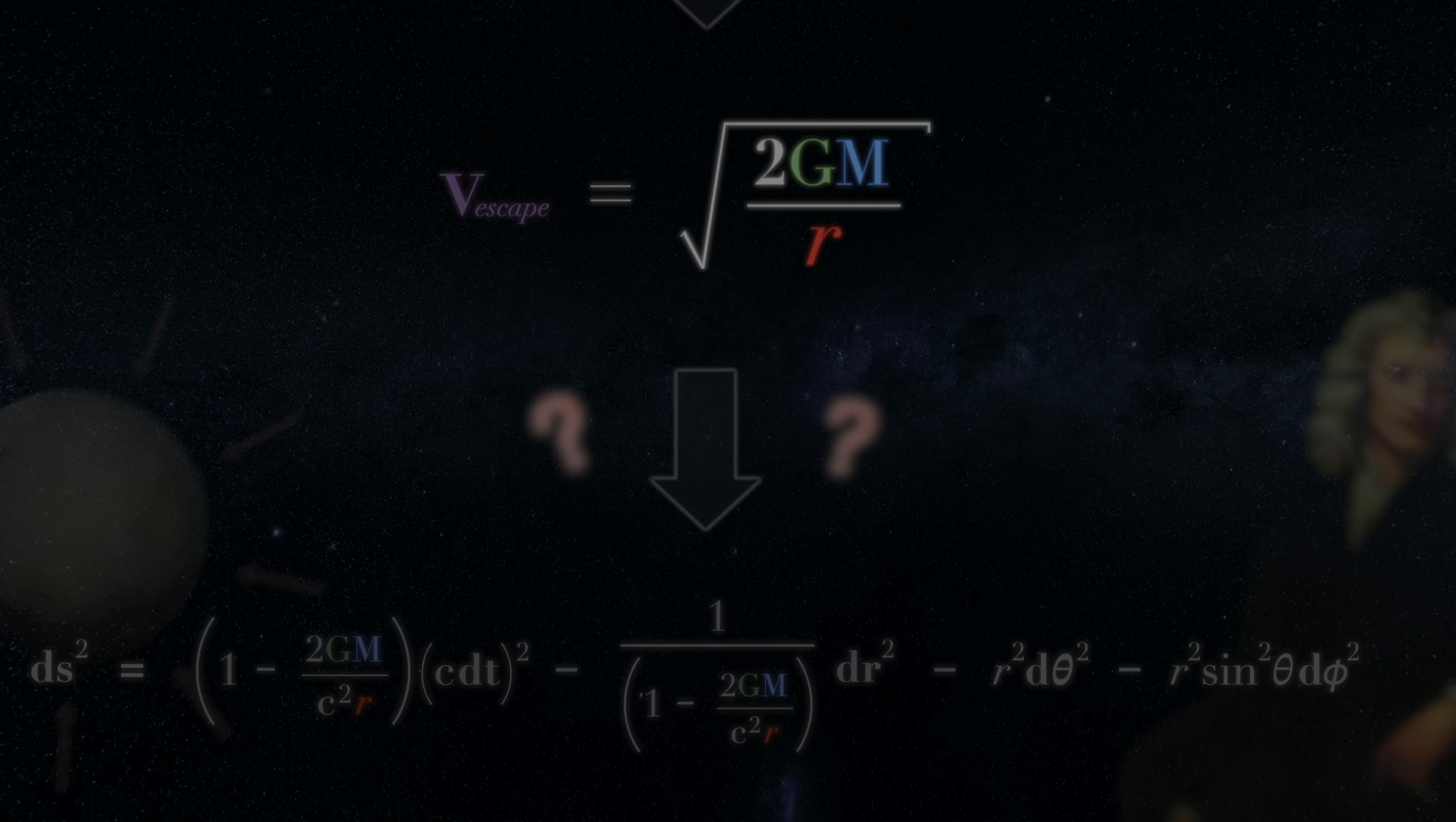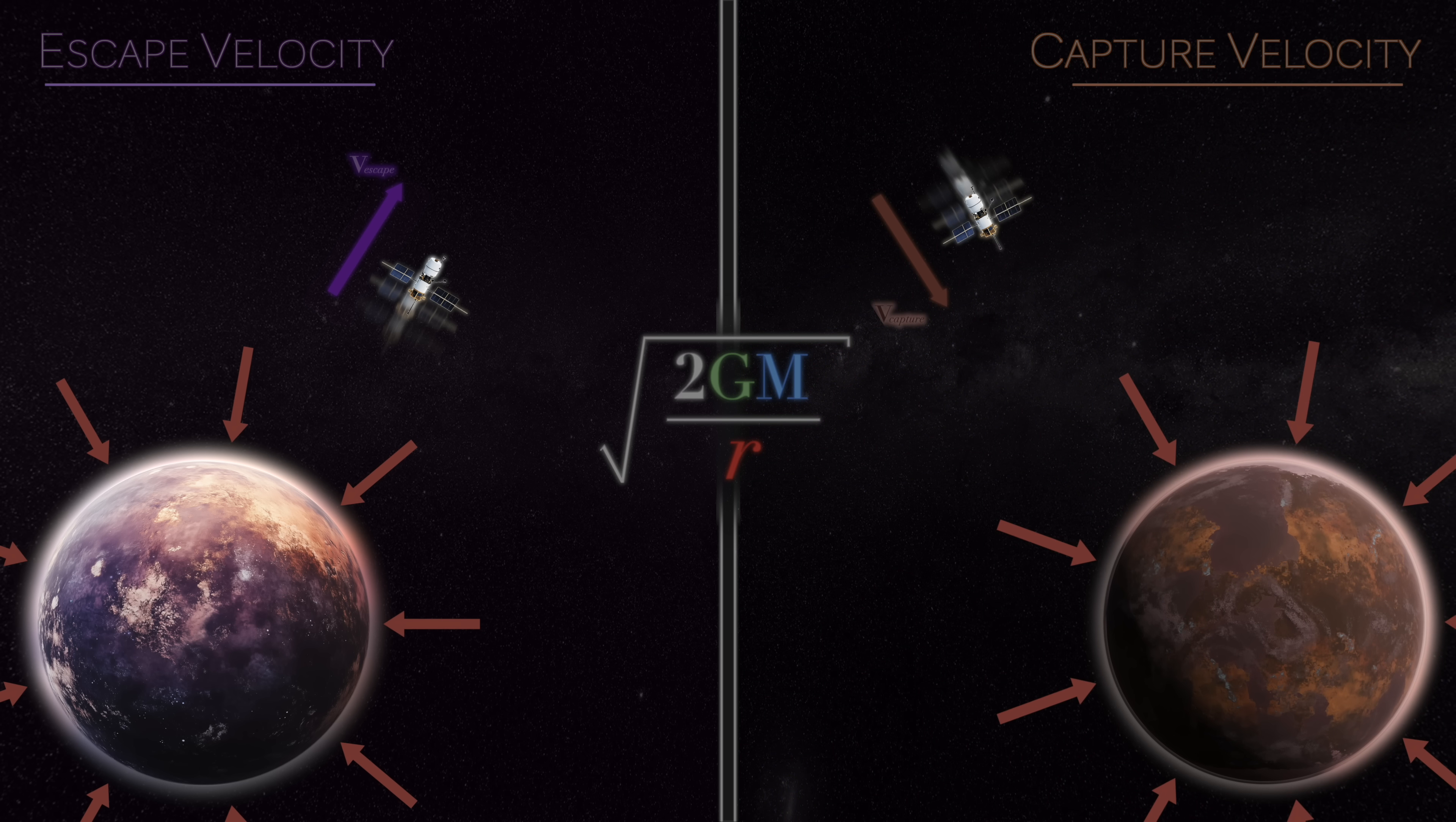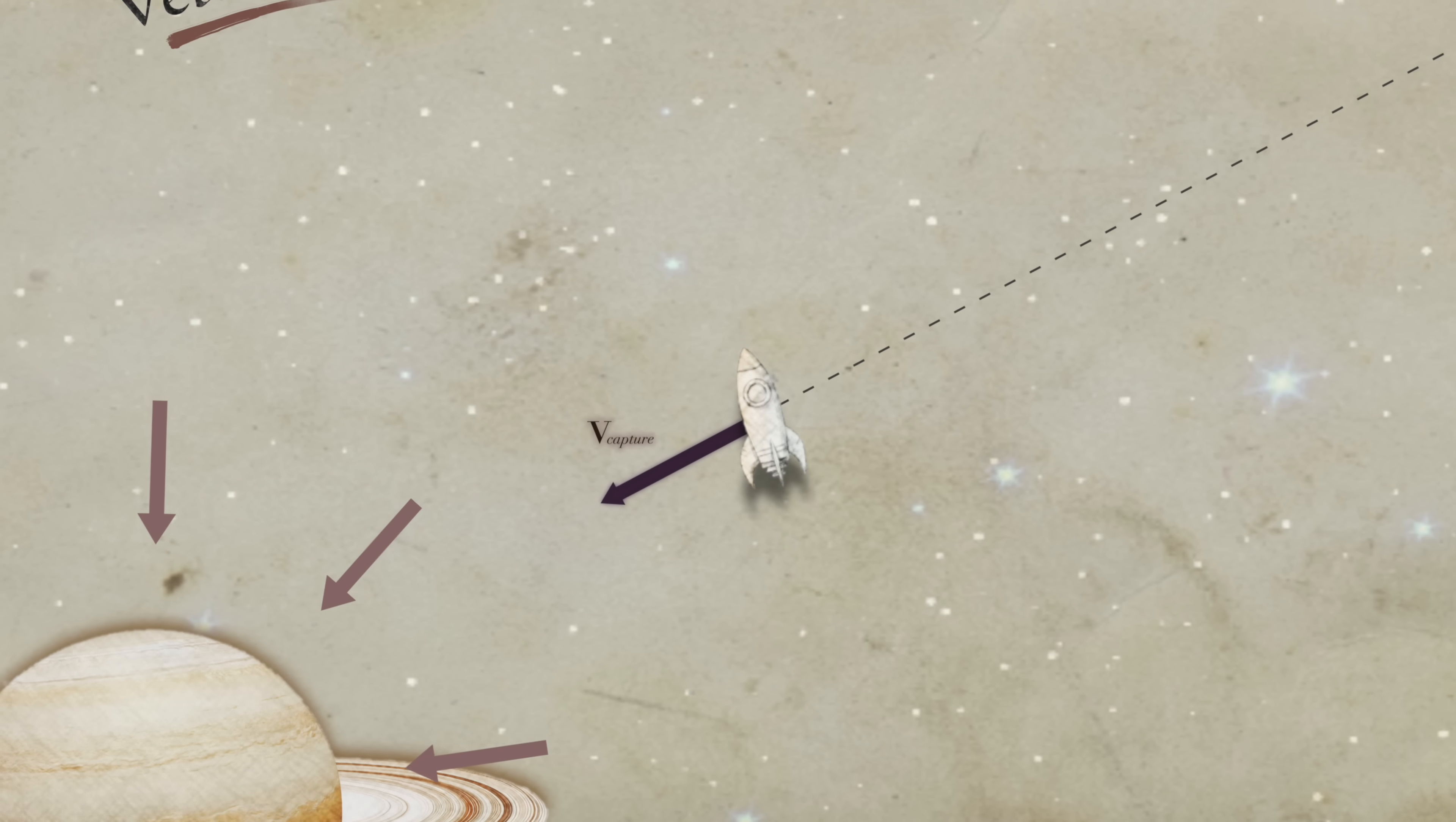Well, digging a little deeper, one can find that, in addition to escape velocity, there's a second physical meaning to the expression the square root of 2GM over r, something one might term capture velocity. This is essentially escape velocity, but in reverse, the velocity acquired by an object released at a very great distance from a mass.